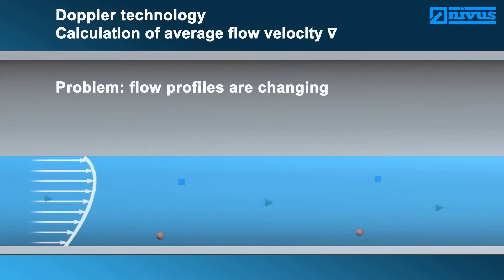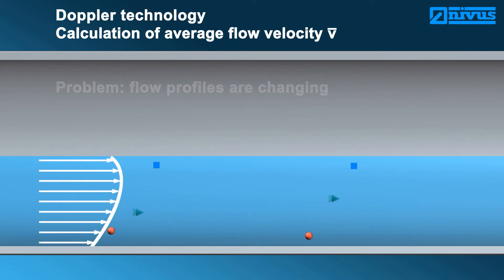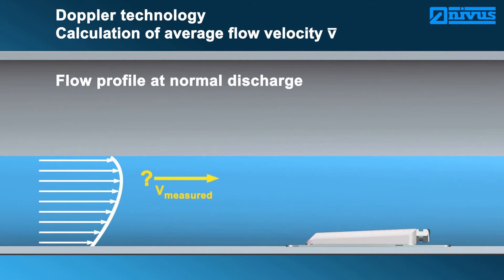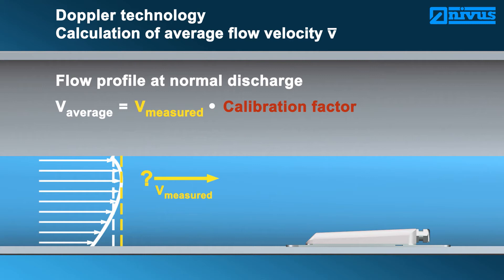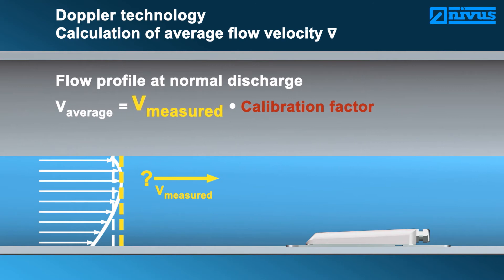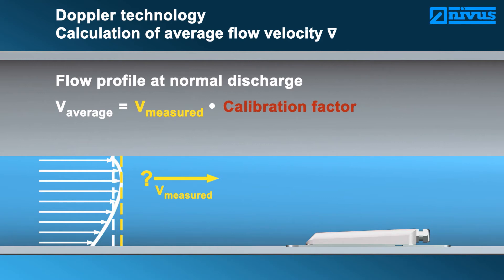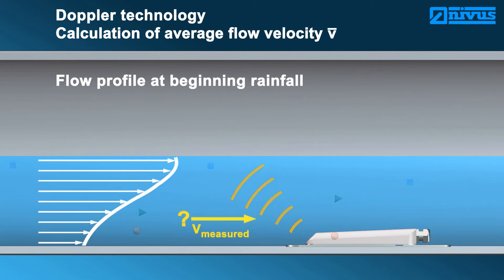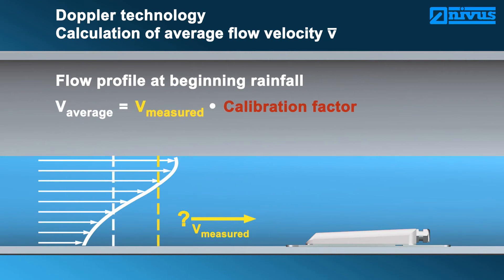The sensor is not able to determine at which level the velocity has been detected. Due to this reason, the flow profile cannot be represented. To counteract this shortcoming, the average flow velocity is computed with the aid of a calibration factor. This factor must be determined previously, such as by implementing a grid measurement, which is fairly time consuming and expensive. The calibration factor is valid only for one stationary condition. If the flow conditions should change, such as due to rainfall, the flow profile will change accordingly, and the originally determined calibration factor is no longer applicable, so the reading is distorted.